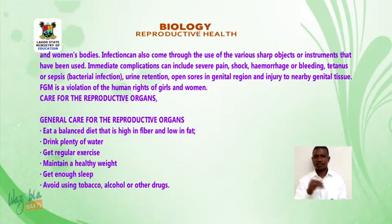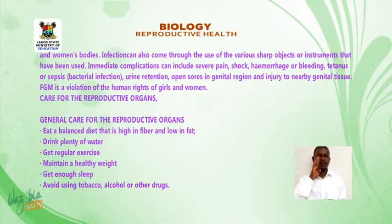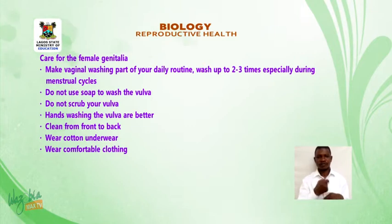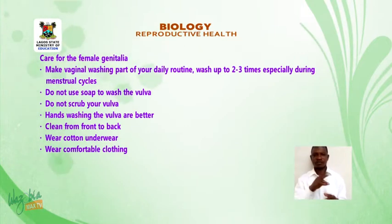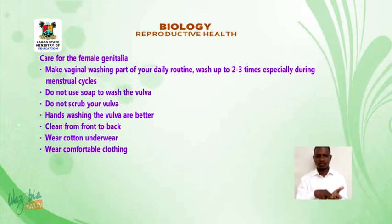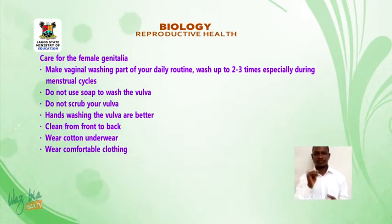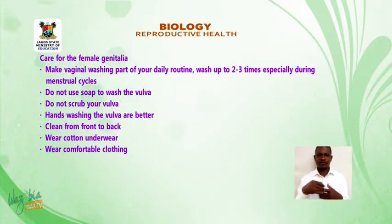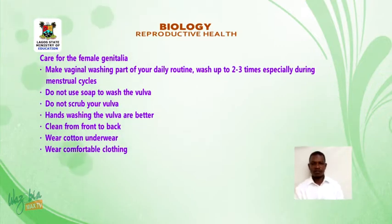Care for the female genitalia: make vaginal washing part of your daily routine. Wash two to three times daily, especially during menstrual cycles. Do not use soap to wash the vulva; do not scrub the vulva. Clean from front to back. Wear cotton underwear and wear comfortable clothing.